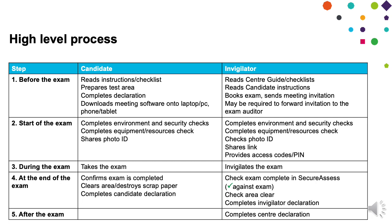We've produced detailed guidance and checklists to help candidates and invigilators step through the process — four stages for the candidate and five for the invigilator: before the exam, at the start, during, at the end, and after. We recommend a session before the exam for the invigilator to check that both parties have read and understood the instructions, that the exam area is set up correctly, that both are clear on the declaration, that the meeting software has been agreed and downloaded, and that equipment and exam conditions are in order.